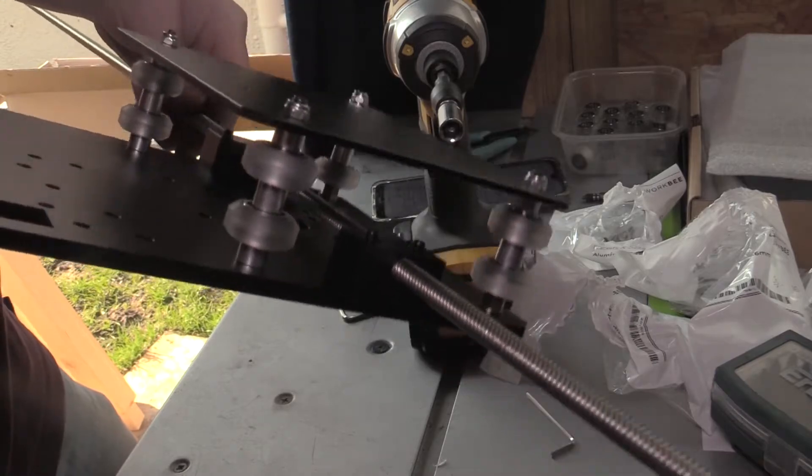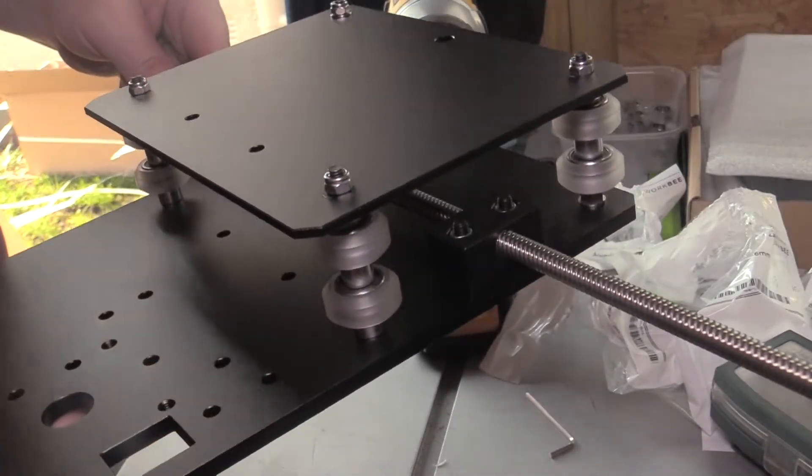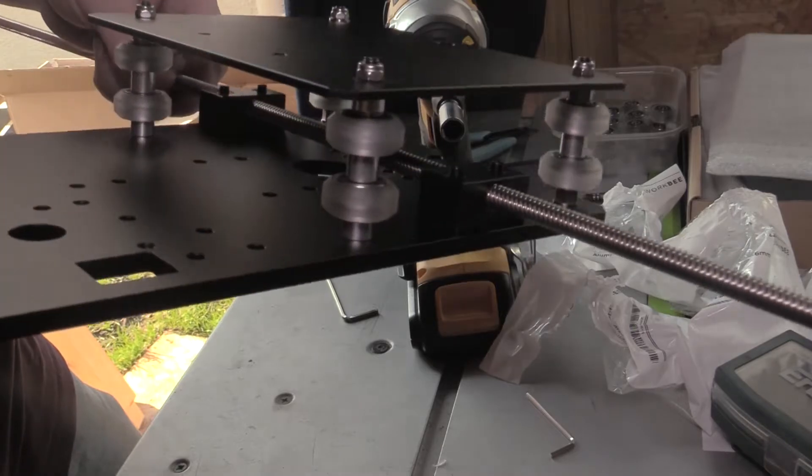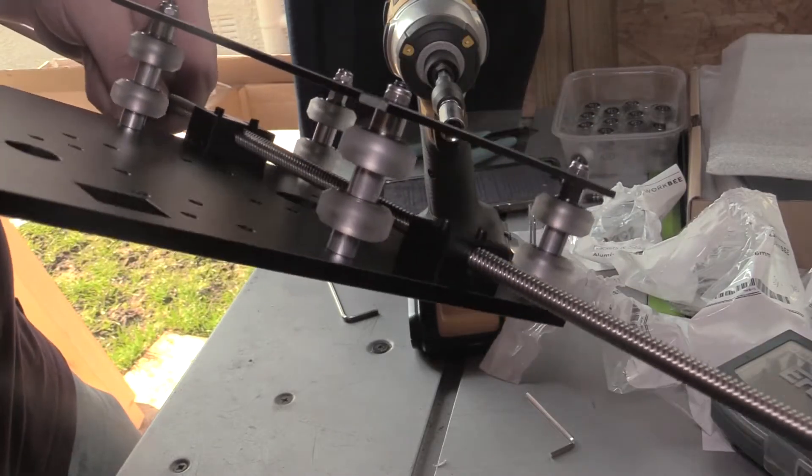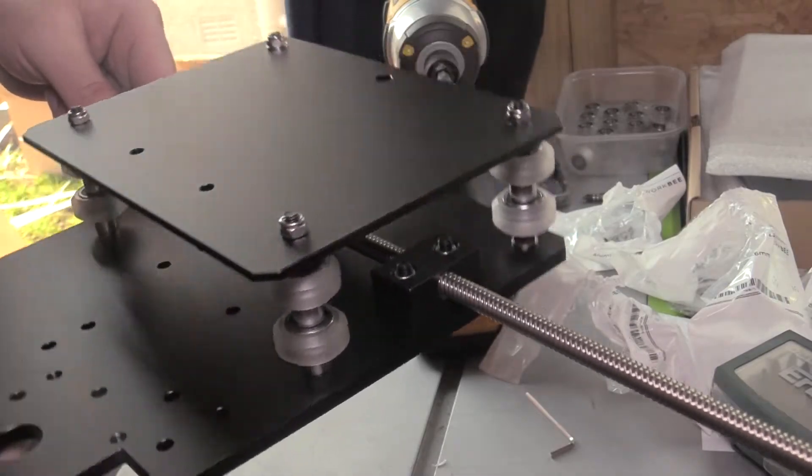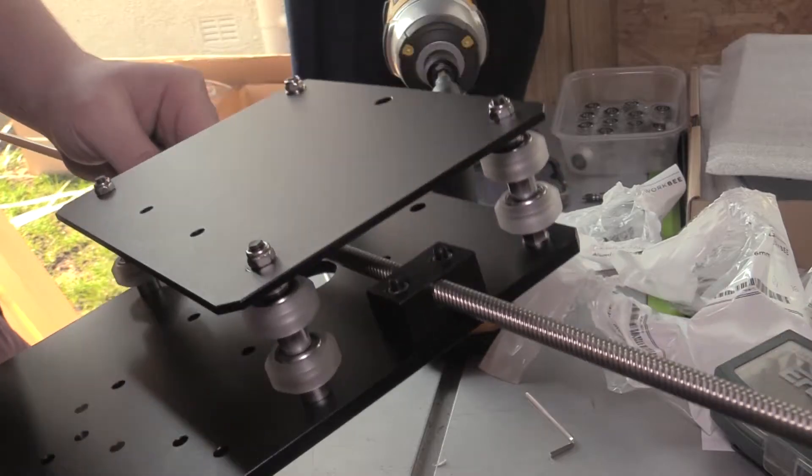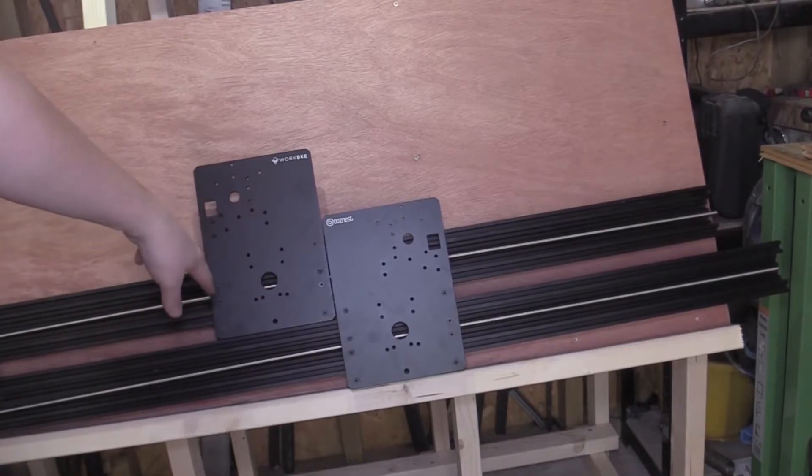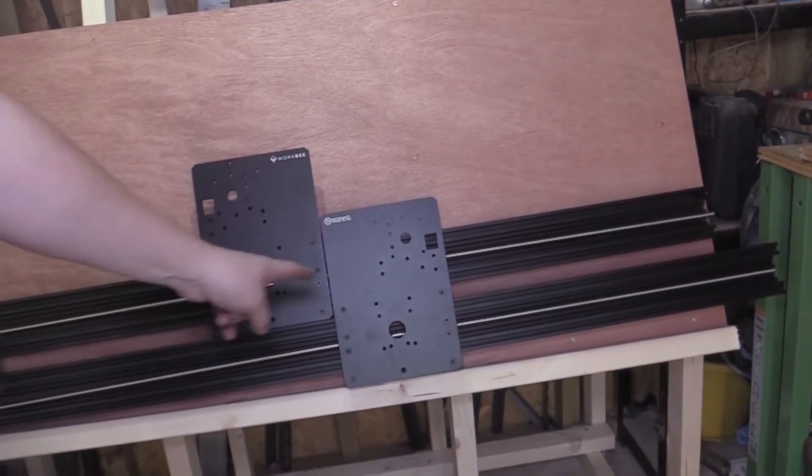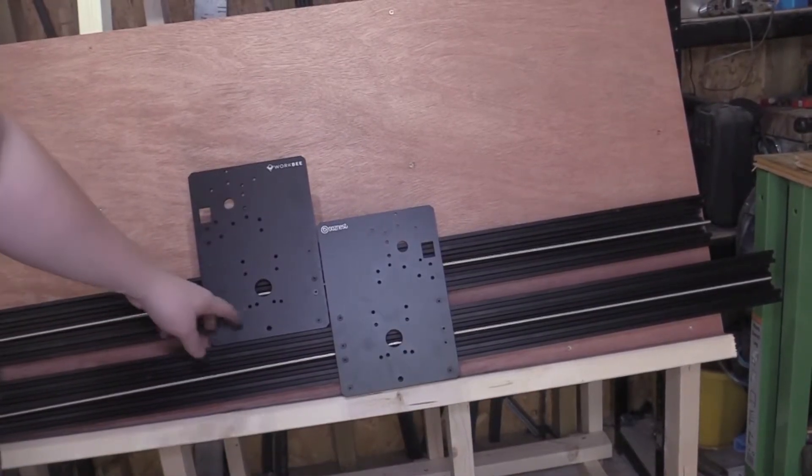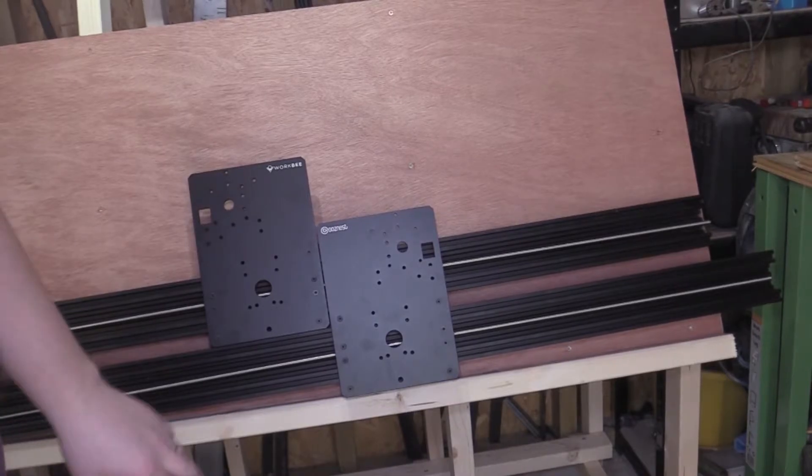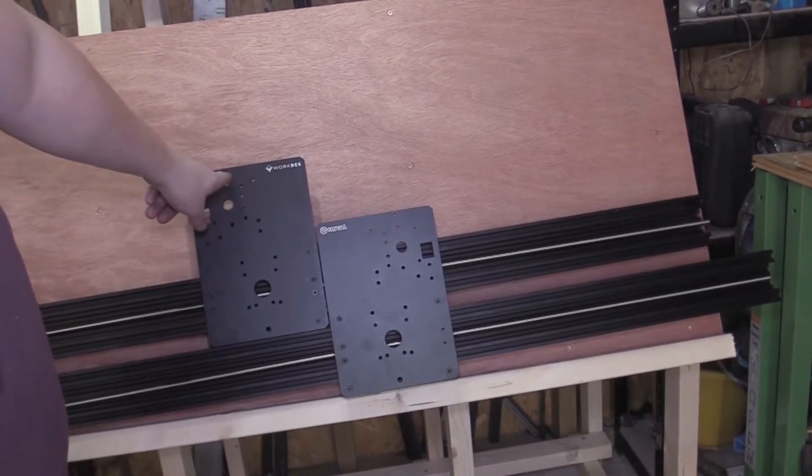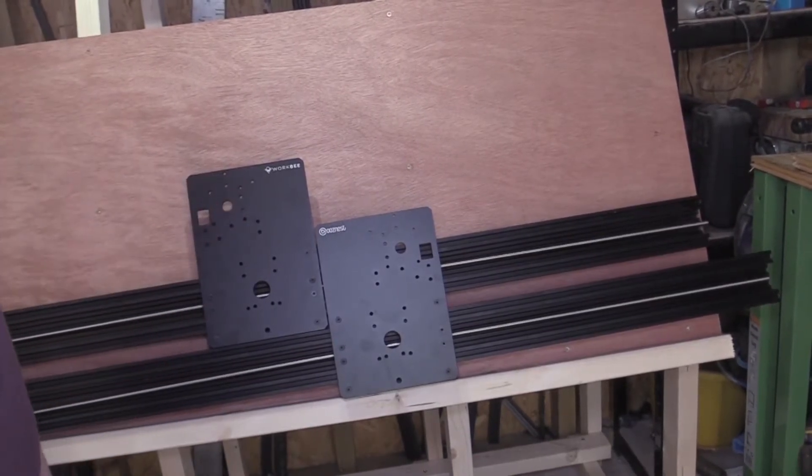It's got the Acme lead screw through the middle on the Acme nuts. I'm guessing the instructions are going to tell me to do the same again for the next plate. I've got the two Y plates complete now with the Acme lead screws running through the middle, and I've put them on the C channel just to set up the wheels. Next thing to do is put the stepper motors on this plate.